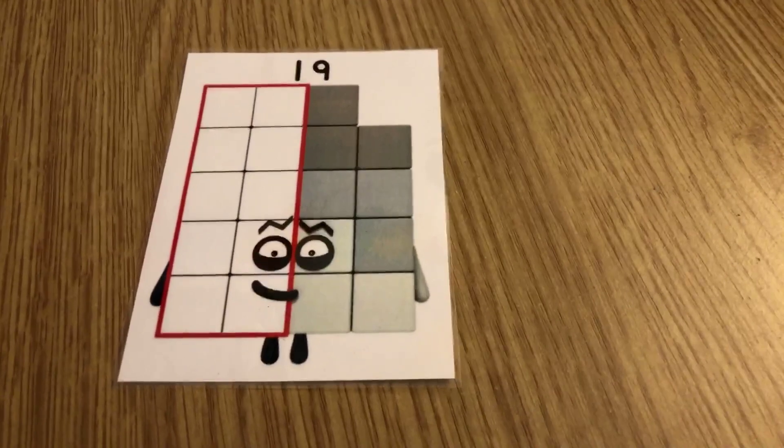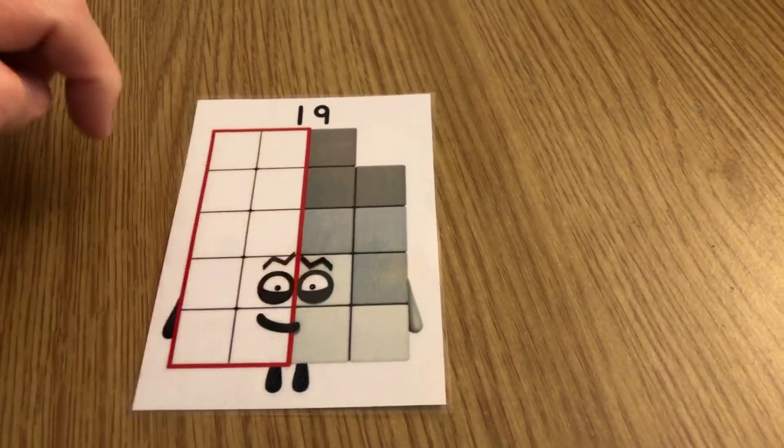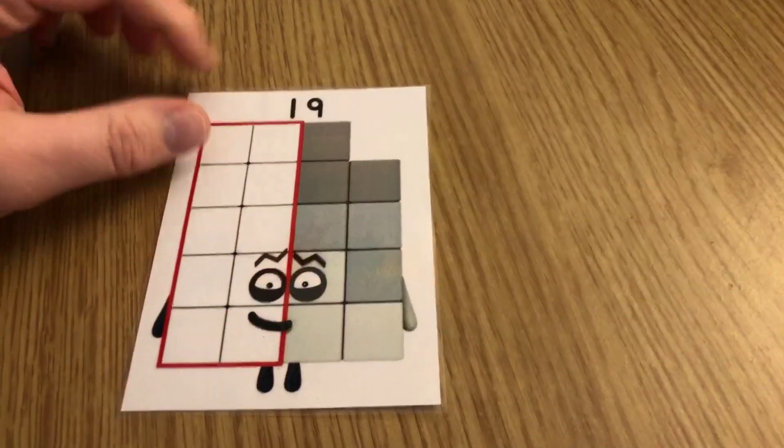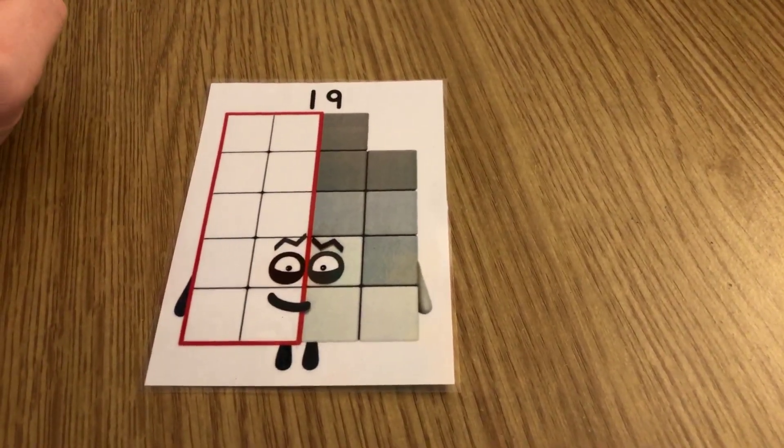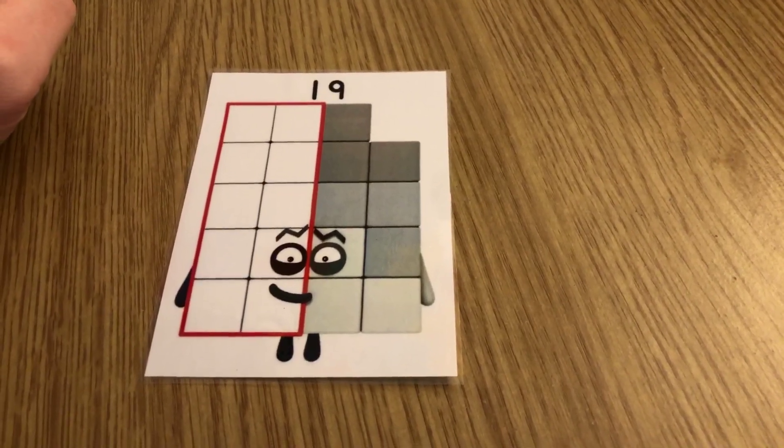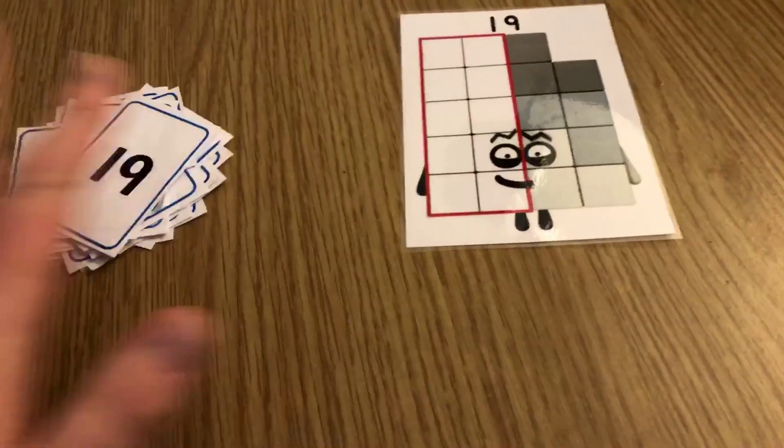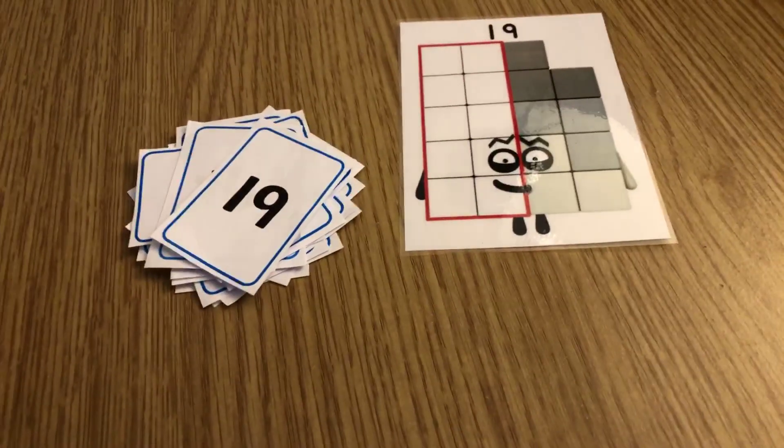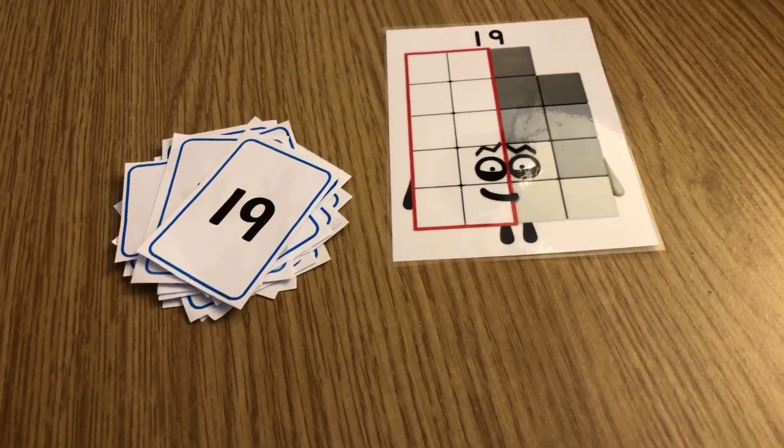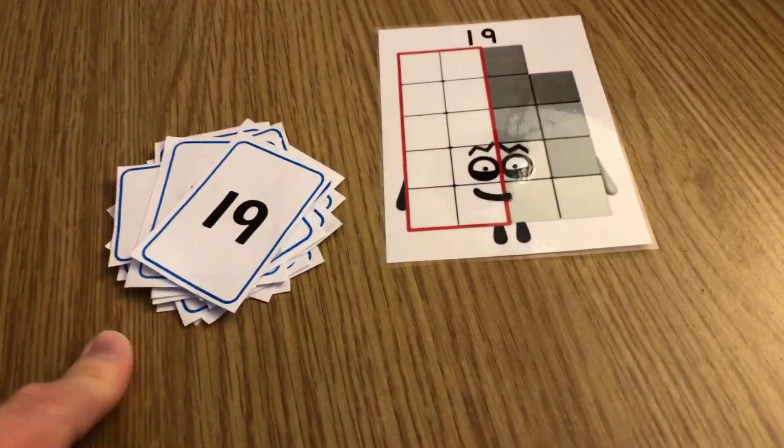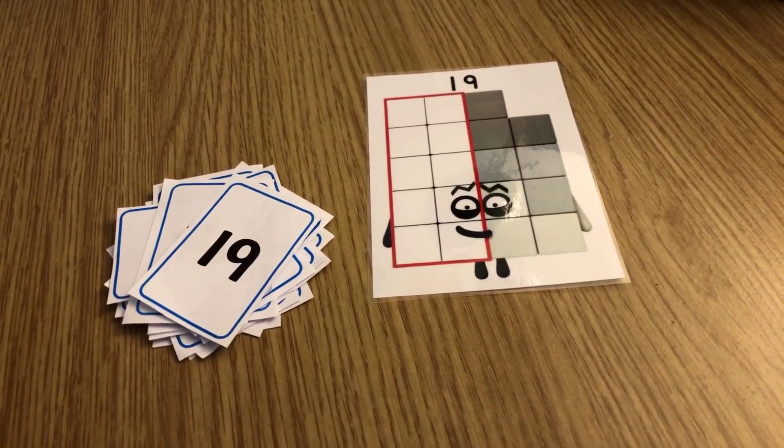So we explored number 19 yesterday, didn't we? A number that has 10 and 9, one 10 and 9 ones. We'll have a little look at that and then tell you some exciting news that I've spotted about number blocks. First of all though, can you get your number cards and put them in order all the way up to 19? I might do the row of 10 and then the row of 9 underneath from 11 to 19. Off you go, pause, come back when you've done that.